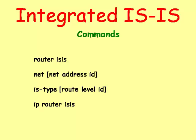The router ISIS command puts the router in ISIS configuration mode. The net command assigns a specific router ID to a router. The IP router ISIS command assigns a specific interface to the ISIS protocol.